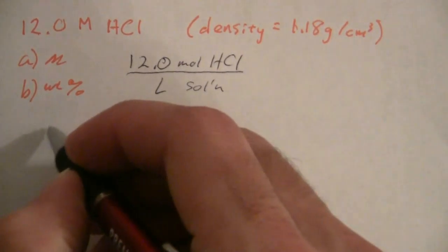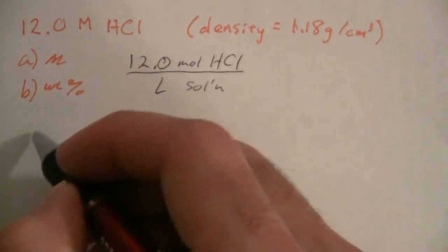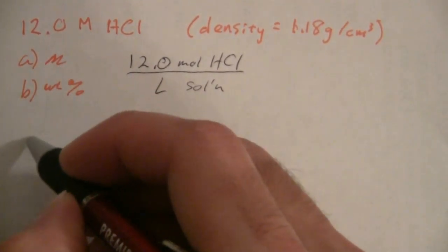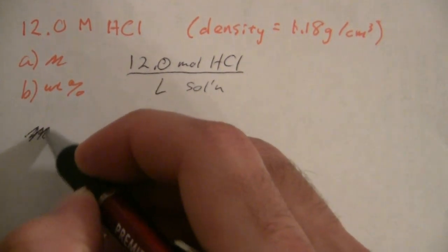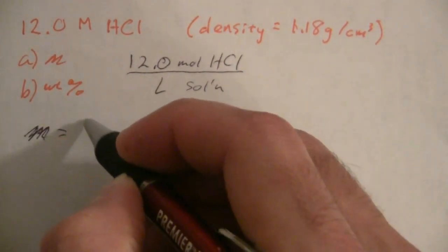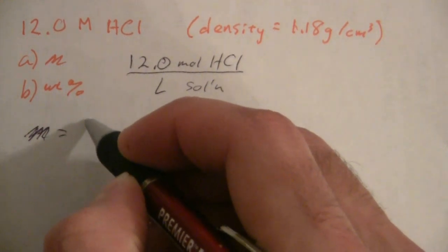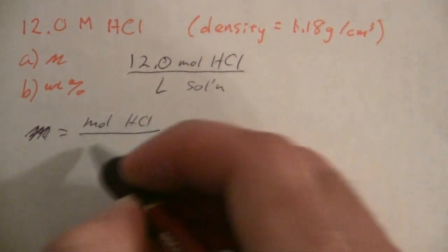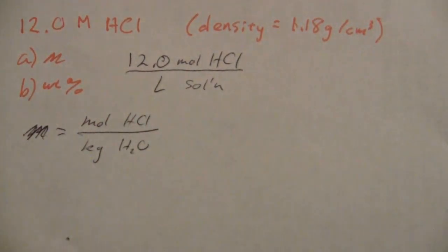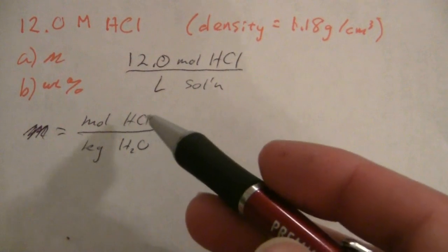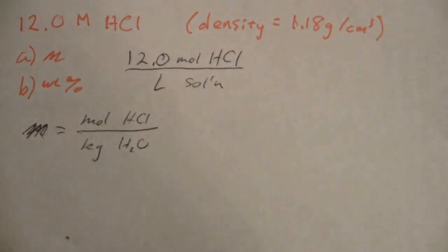So this is what we're given and then what we want to find. For the molality, I'll just do that one first. Molality is equal to the moles of HCl per kilogram of water, that's the solvent. Moles of solute per kilogram of solvent.